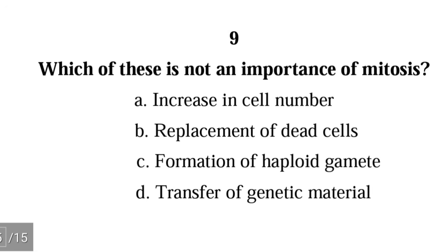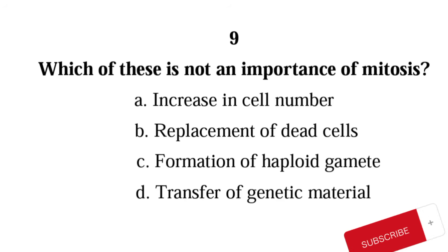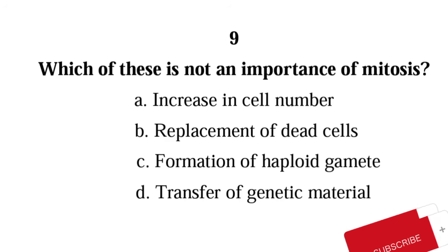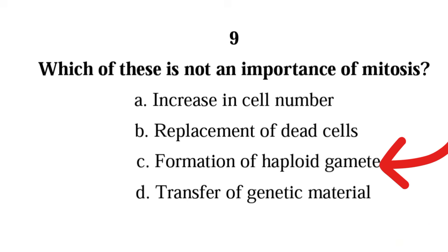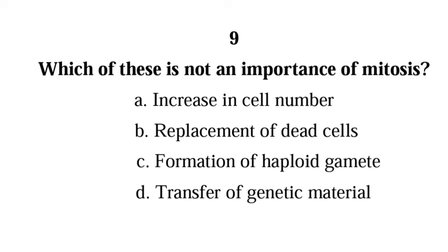Question 9: Which of these is not an importance of mitosis? A) increase in cell number, B) replacement of dead cells, C) formation of haploid gametes, D) transfer of genetic material. The correct answer is C) formation of haploid gametes. Mitosis does not involve formation of haploid gametes — it is meiosis that involves the formation of gametes.